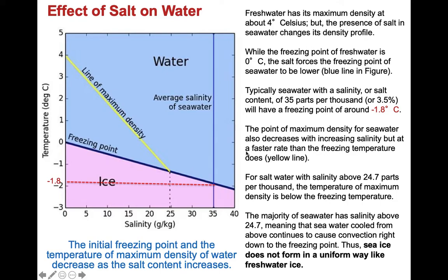The point of maximum density of seawater also decreases with increasing salinity, but at a faster rate than the freezing temperature does. For salt water with salinity about 24.7 parts per thousand, the temperature of maximum density is below the freezing temperature. The majority of seawater has salinity above 24.7, meaning seawater cooled from the top due to atmospheric temperatures continues to cause convection right down to the freezing point. So sea ice does not form in a uniform way like freshwater ice — it forms in very irregular patches.